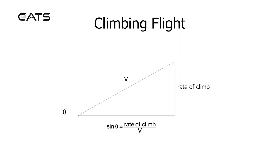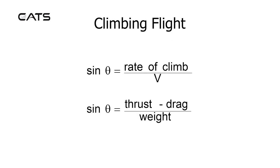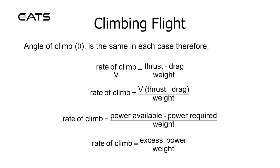A climbing triangle shows the hypotenuse as the flight path V — effectively true airspeed — and the opposite side as rate of climb. This can be rearranged: sine theta equals rate of climb over V (true airspeed), and sine theta also equals thrust minus drag over weight. The angle of climb theta is the same in each case, therefore rate of climb over V equals thrust minus drag over weight.